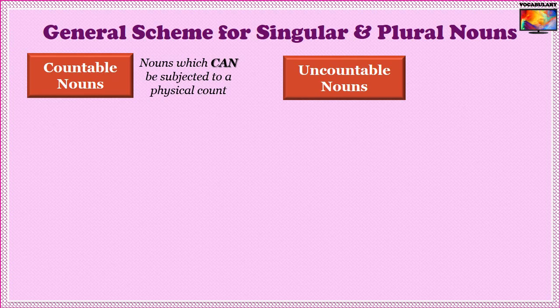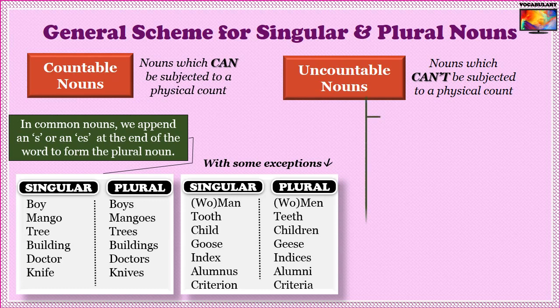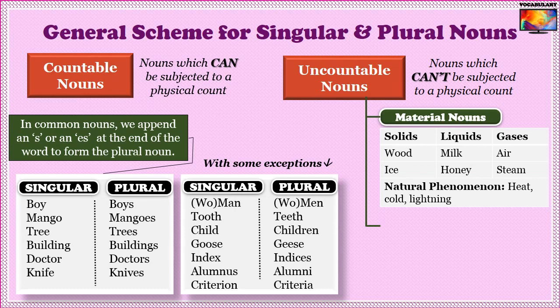For most nouns, it's easy to identify which is singular and which is plural. In common nouns like 'boy,' 'mango,' 'tree,' 'building,' 'doctor,' etc., we append an S or ES to form the plural. But there are a few things that can't be subjected to a physical count at all — they are known as uncountable nouns. Material nouns like 'milk,' 'honey,' 'ice,' 'cold,' 'wood' can't be counted. They are uncountable nouns.